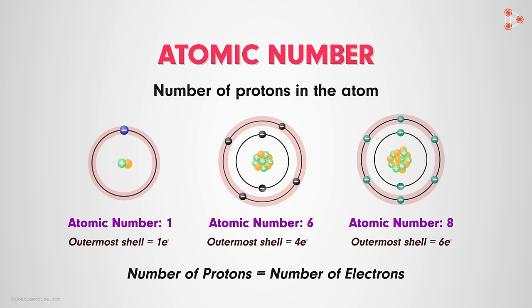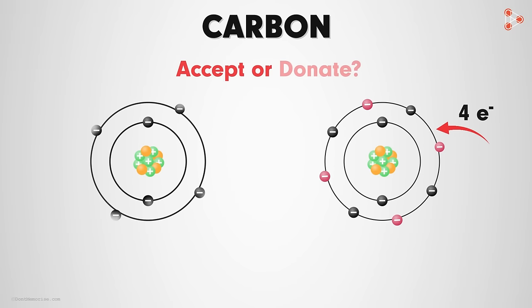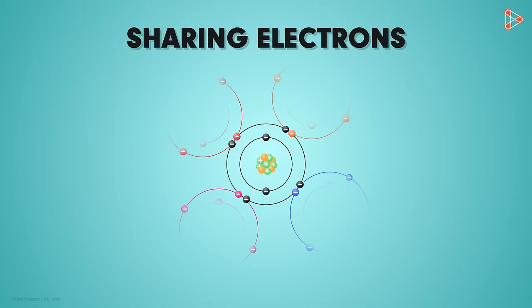Absolutely! The chemical properties of an element are based on the number of electrons present in its outermost orbit. We know that the atomic number of carbon is 6, meaning the electronic configuration of carbon is 2, 4. Now, look at the atomic structure of the carbon atom. To achieve stability, will carbon take 4 electrons or donate 4 electrons? Well, the simplest way to achieve the octet state will be by sharing electrons. This gives us the answer to many queries — the fact that carbon can share its outermost electrons with any other element gives it the capacity to form chemical bonds with various other elements.